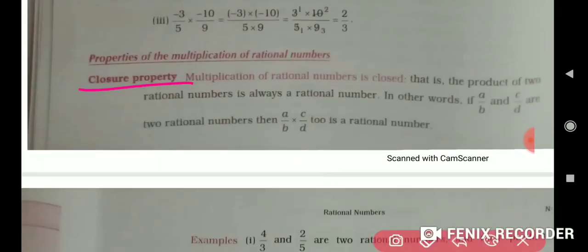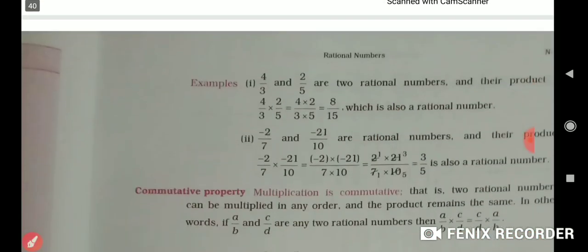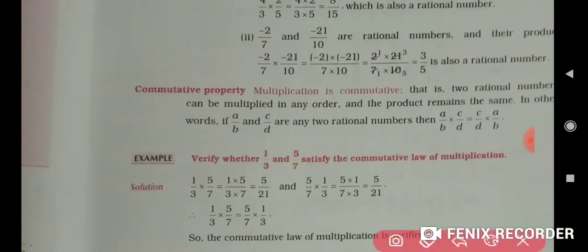First, the closure property. When you have to multiply any two rational numbers, you can use the closure property: a/b multiplied by c/d. I will explain some examples through the sums. Then, the commutative property — as I told you before, in addition commutative property is applicable.